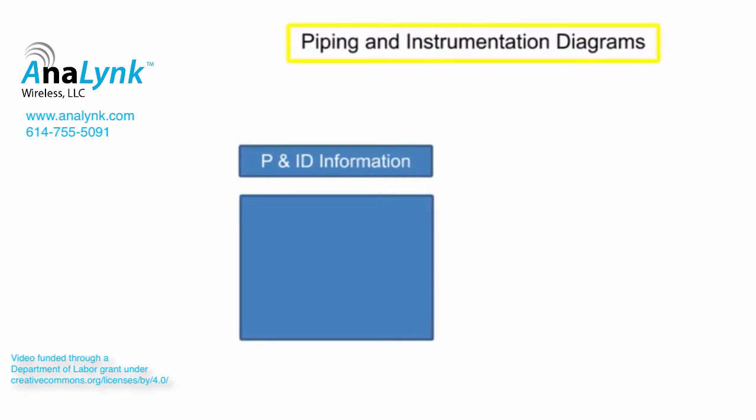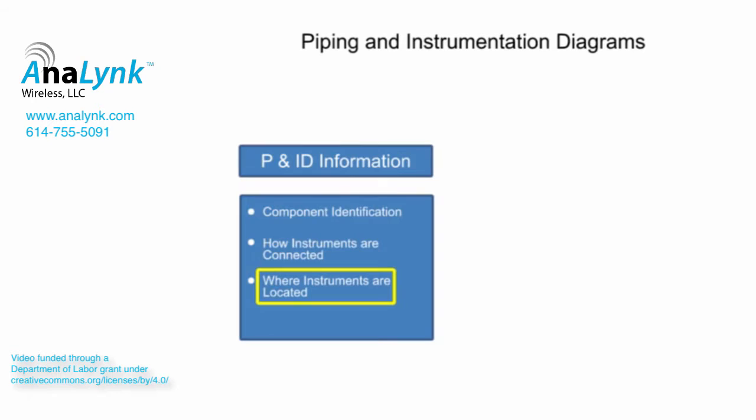Piping and instrumentation diagrams provide information that includes component identification, how instruments are connected, where instruments are located, and their function within a process.